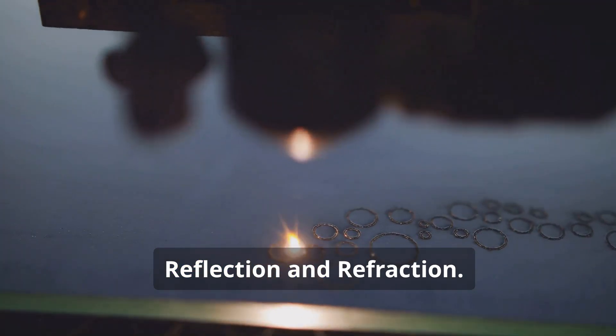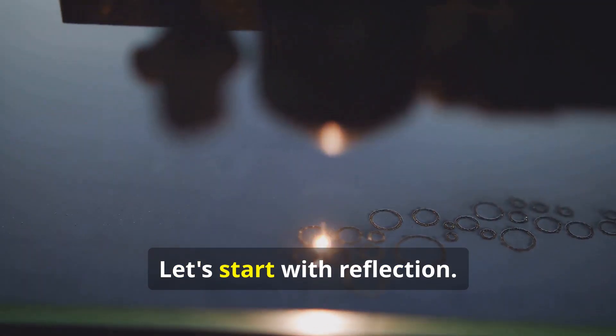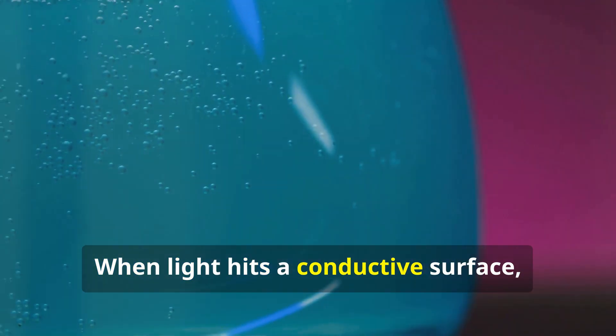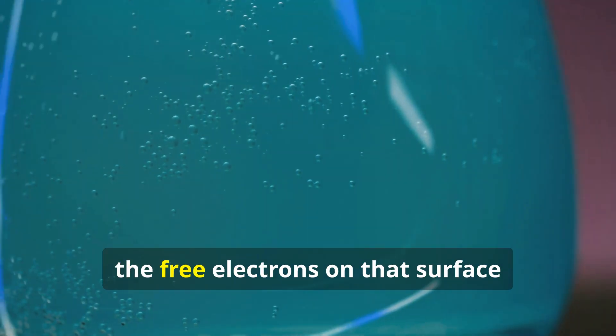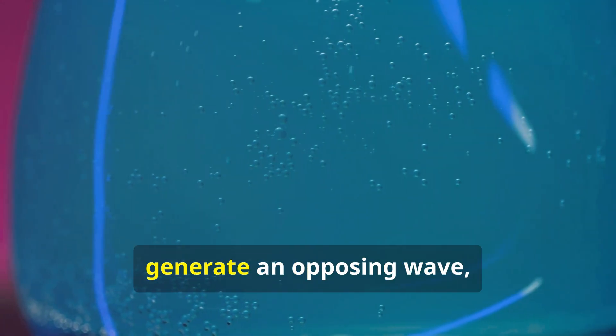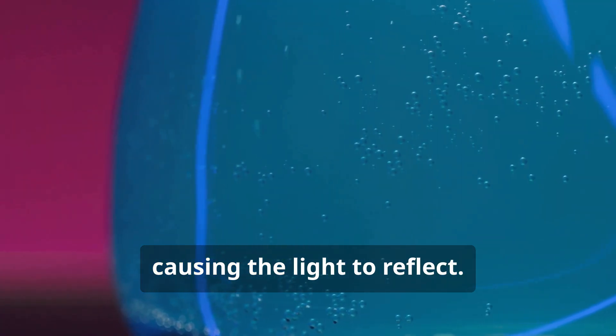Let's start with reflection. When light hits a conductive surface, like a mirror, the free electrons on that surface generate an opposing wave, causing the light to reflect.